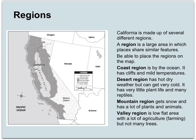First of all, we've got a map of California right here. California is made up of several different regions. What's a region? A region is a large area in which places share similar features.